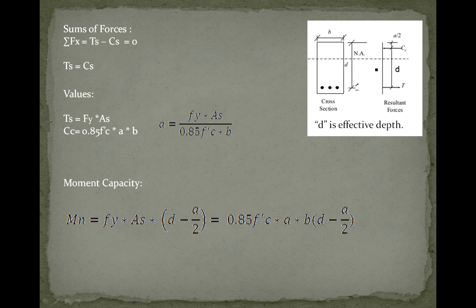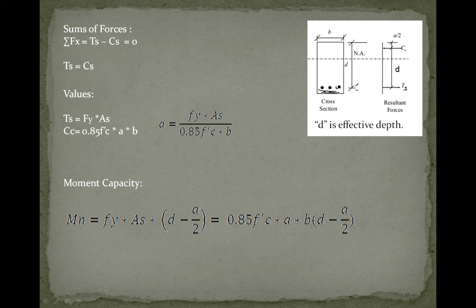Taking the resultant forces, the compression resultant force Cc acts at the center of the uniform block, and the tension force Ts acts at the center of the reinforcing bars. The distance from the extreme compression edge to the center of the reinforcing bars is called the effective depth, because the concrete below the bars works just as cover to protect the steel. Applying Newton's law and because the section is at equilibrium, Ts equals Cc — meaning the tension of steel equals the compression in the uniform block.